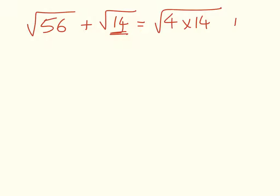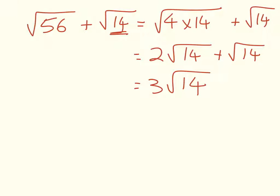Number 3: square root of 56 plus the square root of 14. Well, you can guess that we're looking for 56 to be written as 14 times something—4 times 14 plus the square root of 14. So that equals 2 root 14 plus root 14, which is just 3 root 14.